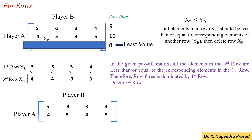Then, compare the first row with the second row. Here, 5 is greater than minus 4. So, the condition is not satisfied.